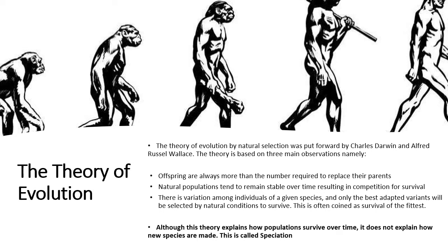The third observation is that there is variation among individuals of a given species, and only the best adapted variants will survive. Those who have variation in their favor — for example, a brown rabbit in the woods is better adapted to survive — are able to pass their alleles to the next generation. This is what is often called survival of the fittest.